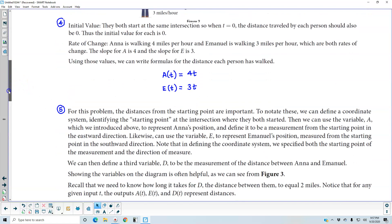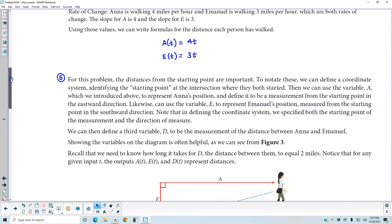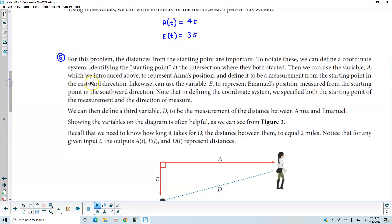Now, for this problem, the distances from the starting point are important. To notate these, we can define a coordinate system identifying the starting point at the intersection where they both started. Thus, then we can use the variable A, which we introduced above to represent Anna's position.